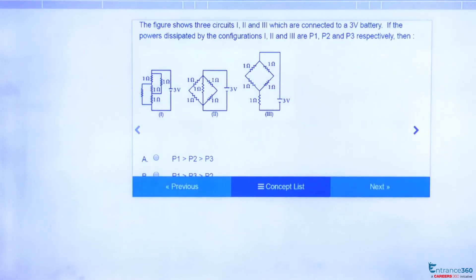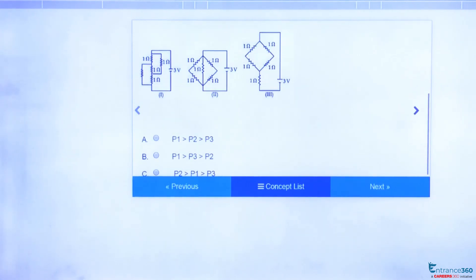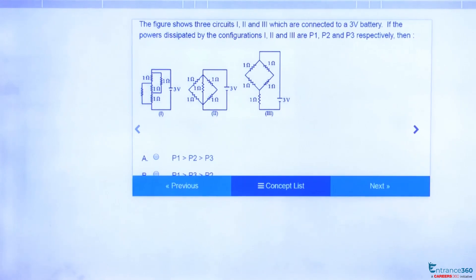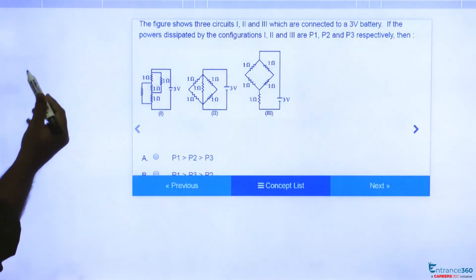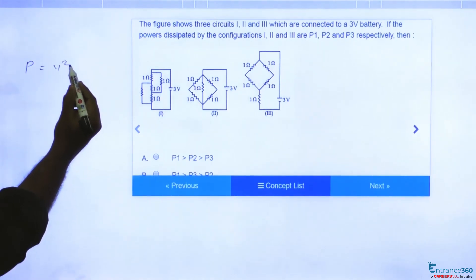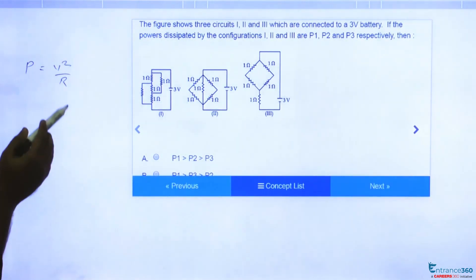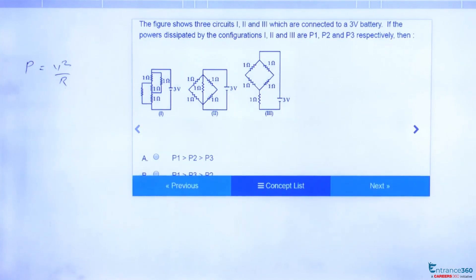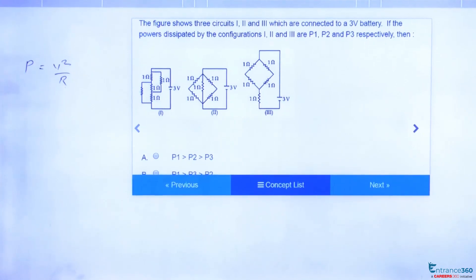Hello students, we have an interesting question from JEE Main 2017 asked in the chapter Current Electricity. Three circuits are given and we have to tell which has the greatest power dissipated. To proceed, you know power dissipated P equals V squared by R. As voltage is same, we can compare the equivalent resistance of the circuits. Power is inversely proportional to resistance.